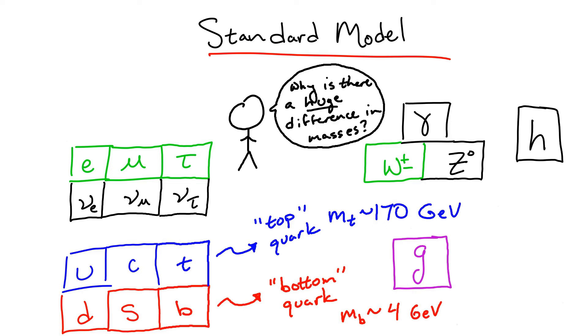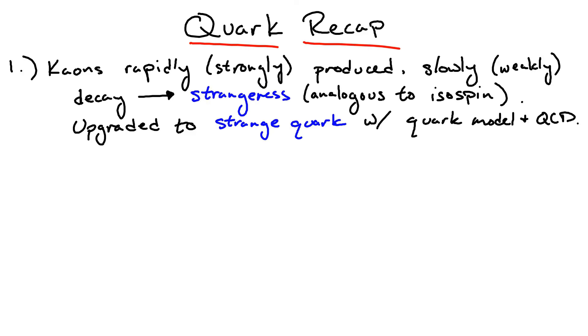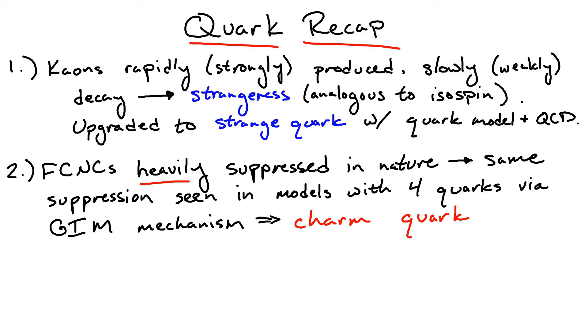Okay, I know that was a lot to take in, so let's recap how all this worked out in the quark sector. After discovering kaons and observing their pattern of rapid production but slow decays, an analogous quantum number to isospin known as strangeness was introduced to explain the phenomenon. Once the isospin picture was upgraded to the quark model, strangeness was as well, leading to the introduction of the strange quark. After this discovery, kaons were studied more deeply, and it was found that flavor-changing neutral currents seemed far more suppressed in nature than the 3 quark model predicted. It was discovered that introducing a fourth quark, the charm, led to destructive interference in such processes, thus explaining the heavy suppression of FCNC processes via the GIM mechanism.